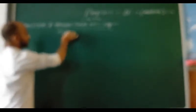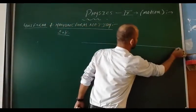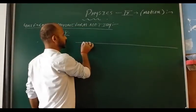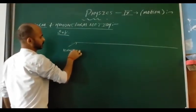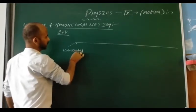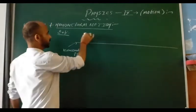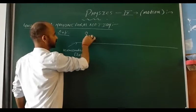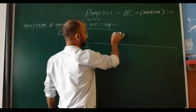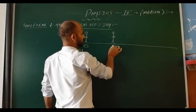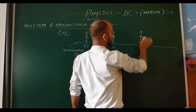First of all I will explain uniform motion. In the example you see a straight line — a horizontal plane. There is an object. This is the initial position, point O. After taking some time, the object reaches point B.